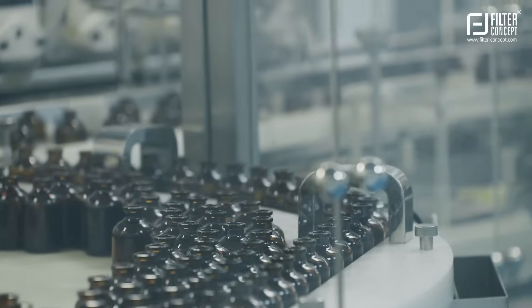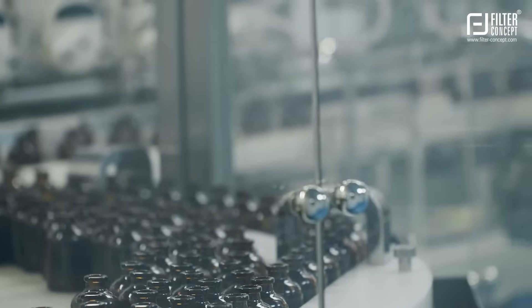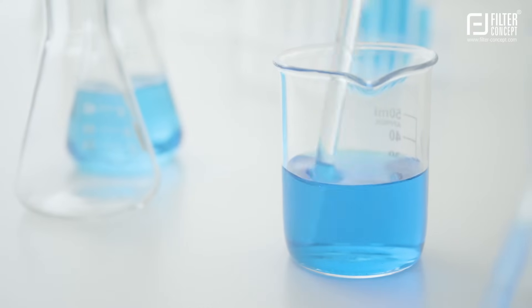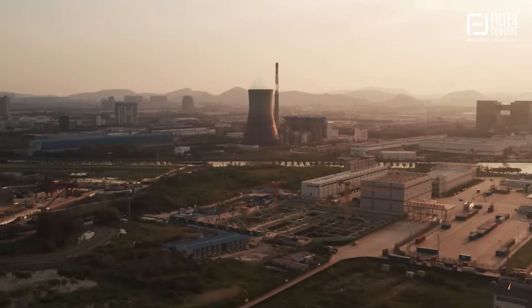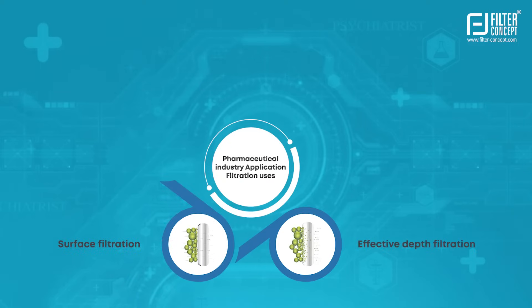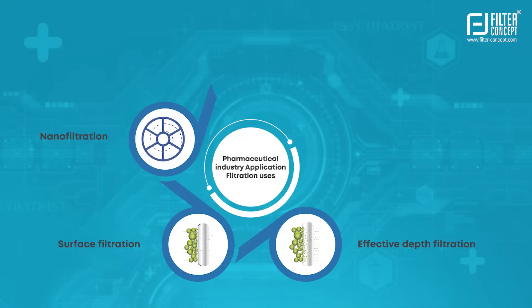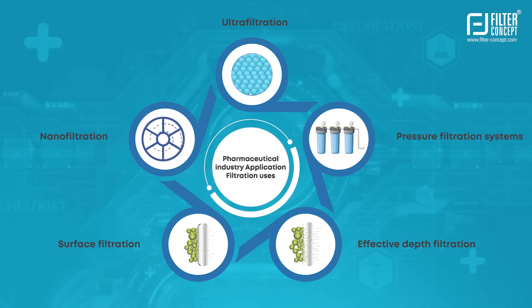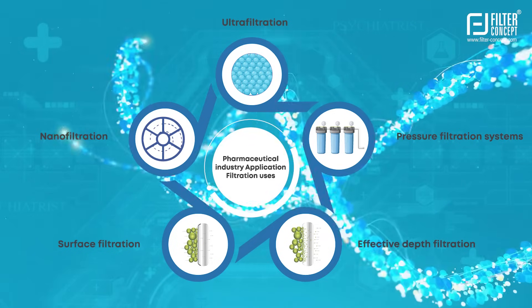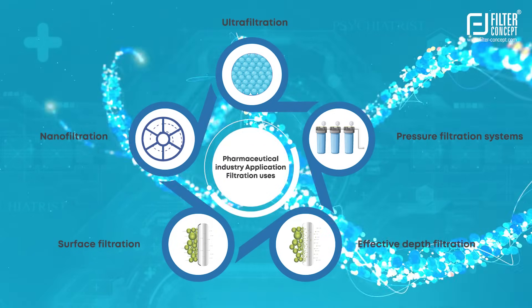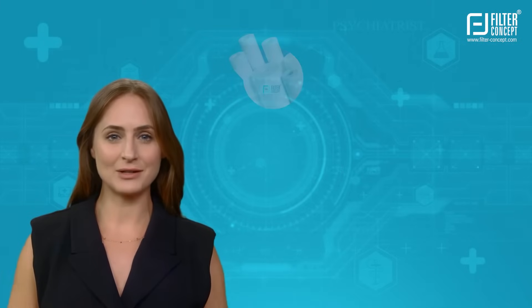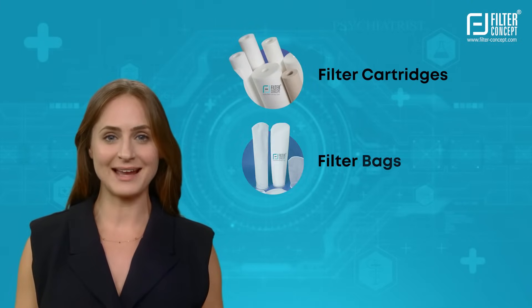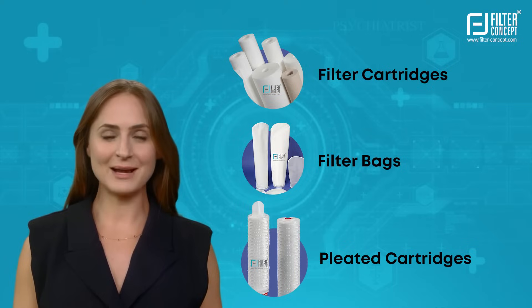Pharmaceutical APIs contain various impurities, including chemical, organic-inorganic, and other unwanted particles. The pharmaceutical industry uses effective depth filtration, surface filtration, nanofiltration, ultrafiltration, and pressure filtration systems to remove particles of microns, submicrons, and small macromolecules. These various filtration systems are followed by filter cartridges, filter bags, and pleated cartridges for different separations of solids, liquids, or gases.